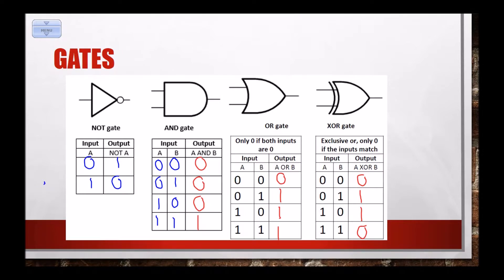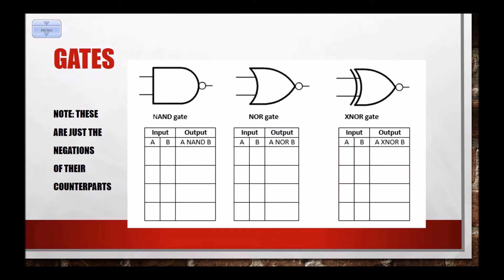Now, we have three other gates that are related to those we just did. The NAND gate is just NOT AND, so it has the opposite values of AND. Remember, AND was 0, 0, 0, 1, so NAND is 1, 1, 1, 0.